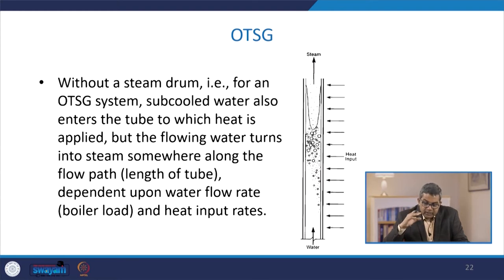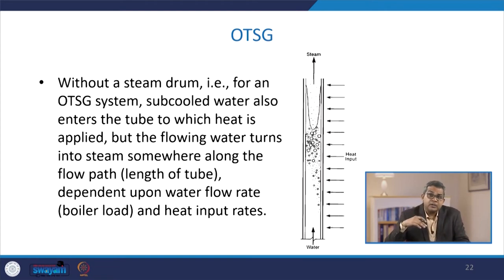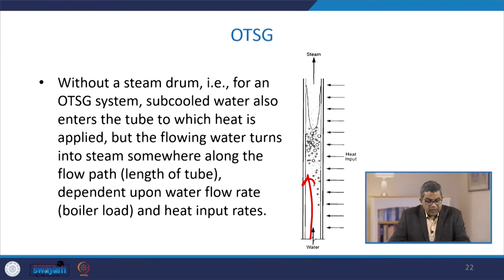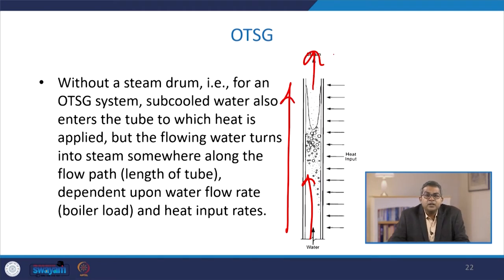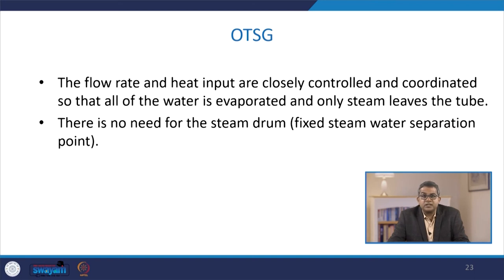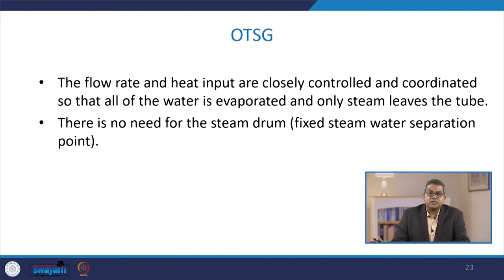Without a steam drum in an OTSG system, sub-cooled water enters the tube to which heat is applied, but the flowing water turns into steam somewhere along the flow path. This depends upon the water flow rate and heat input rate — these two are the variables for OTSG. The flow rate and heat input are closely controlled and coordinated so that all the water is evaporated and only steam leaves the tube, with no need for a steam drum or fixed steam-water separation point.